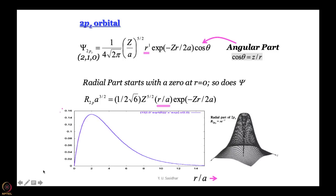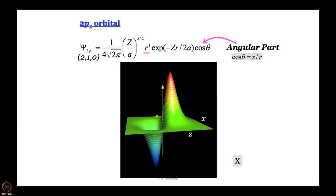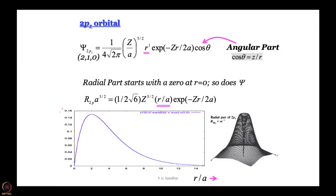Now we try to show you some even more beautiful pictures. We move on to p orbitals — the simplest being the 2pz orbital. Here the principal quantum number is 2, the azimuthal quantum number is 1, and the magnetic quantum number for 2pz is equal to 0.